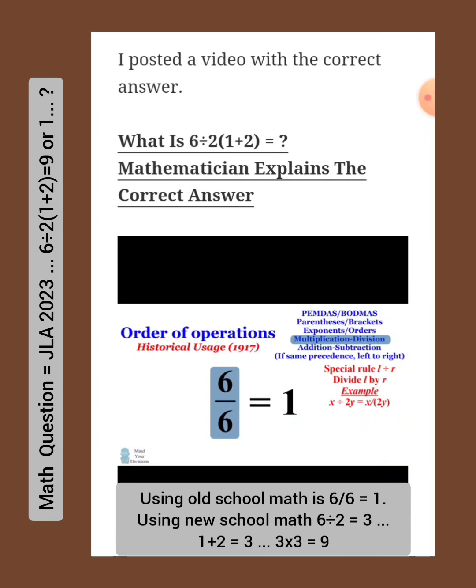Today, we don't use this practice because it can be confusing. Instead, we follow the order of operations. If we want to have a fraction, we will put it as an expression like 6 over 6, which is written here. So the correct answer to this problem is 9, but there is some historical justification for the answer 1, but it's not how we would interpret the problem today.